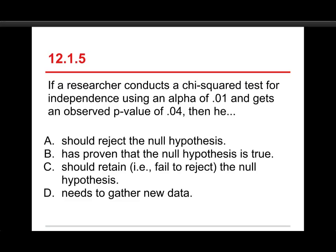Alright, number five. Last question in quiz one. If a researcher conducts a chi-squared test for independence using an alpha of 0.01 and gets an observed p-value of 0.04, then he A. should reject the null hypothesis, B. has proven that the null hypothesis is true, C. should retain or fail to reject the null hypothesis, or D. needs to gather new data.